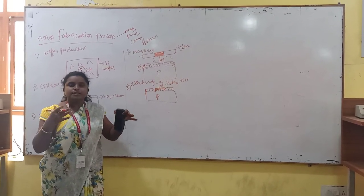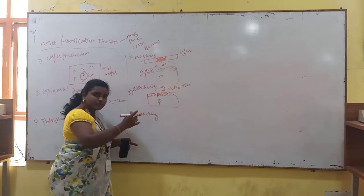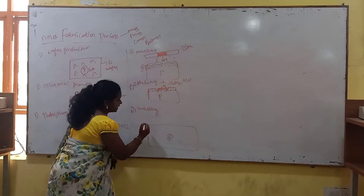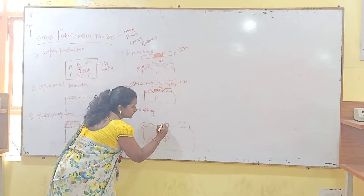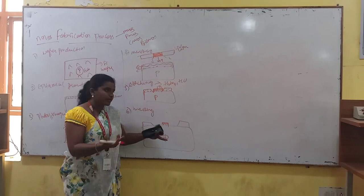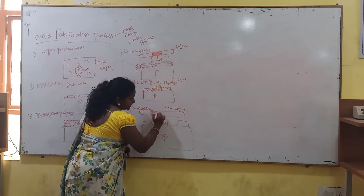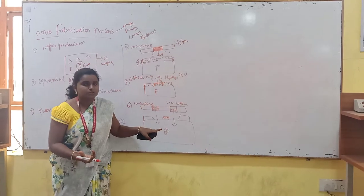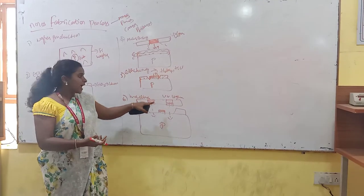Next, the source and drain terminals still need to be formed. So again we do the masking procedure with UV light, masking the regions where the drain and source terminals should be formed. These two terminals should also be hardened to withstand external conditions. That is the reason we are doing the masking again. After that, we will be doing the diffusion process.